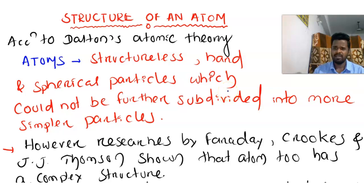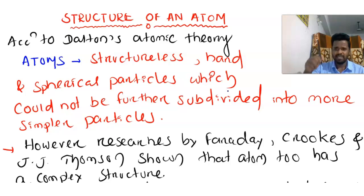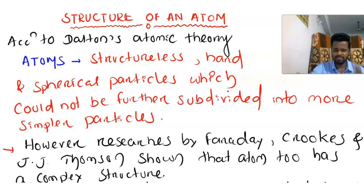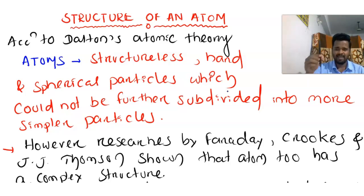A question arises: what is matter? Matter is anything that has mass and occupies some space. For example, I have this pen. This pen has some mass, and when I put it on the table, this pen occupies some space on the table. That's why this pen is one example of matter. This matter is constituted of atoms — many types of atoms are present in this pen.